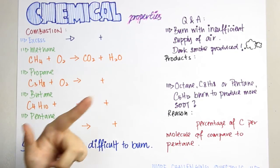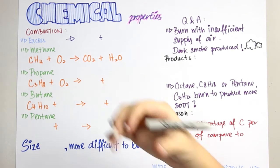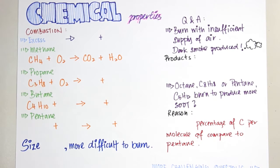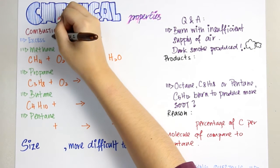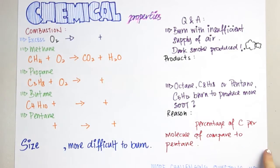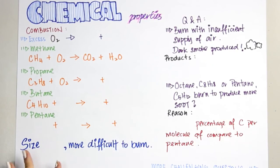We will start with combustion. As we know, combustion means the process of burning. If you burn something, you will need oxygen gas, and it will produce water and carbon dioxide only. So burning alkanes with excess oxygen gas produces water and carbon dioxide only.